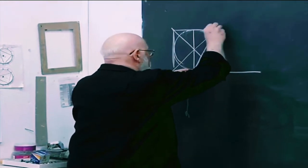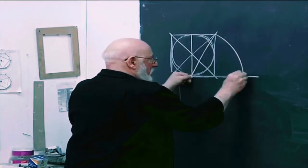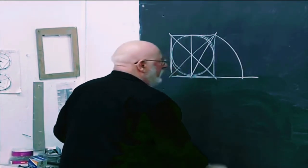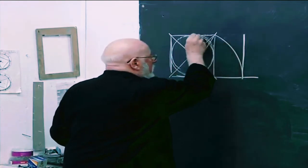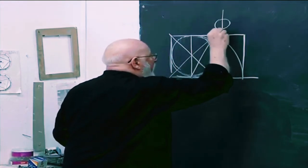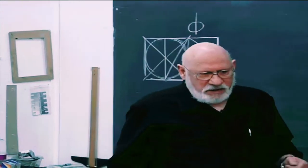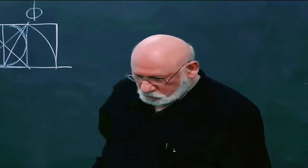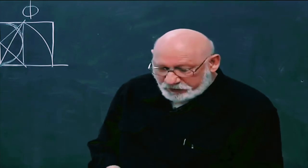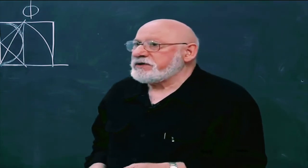So if I take this distance and I bring it down, I get a phi rectangle. And this caliper is on the phi ratio.